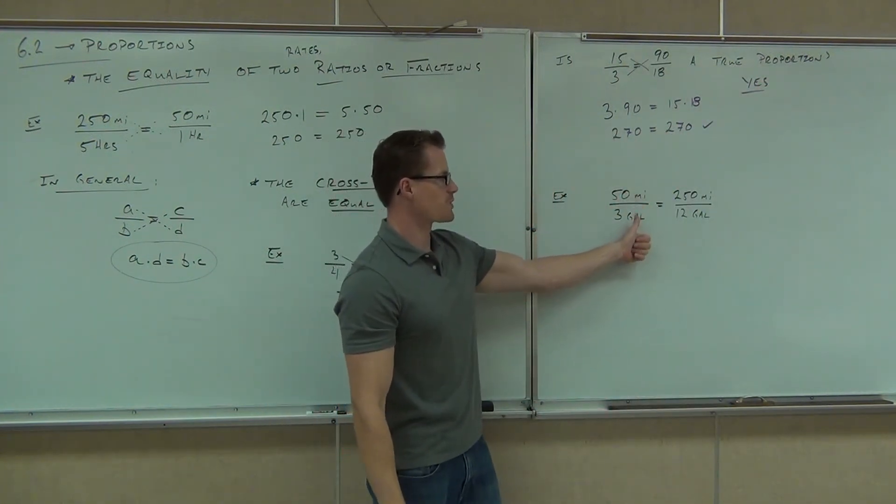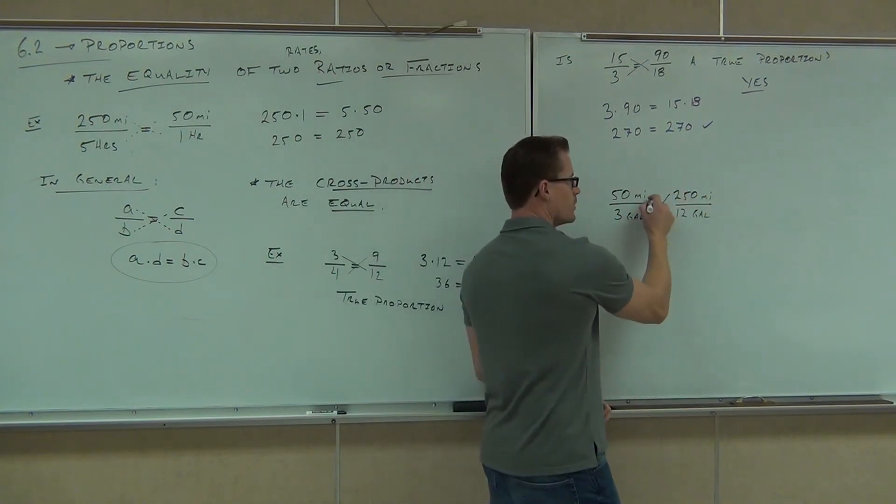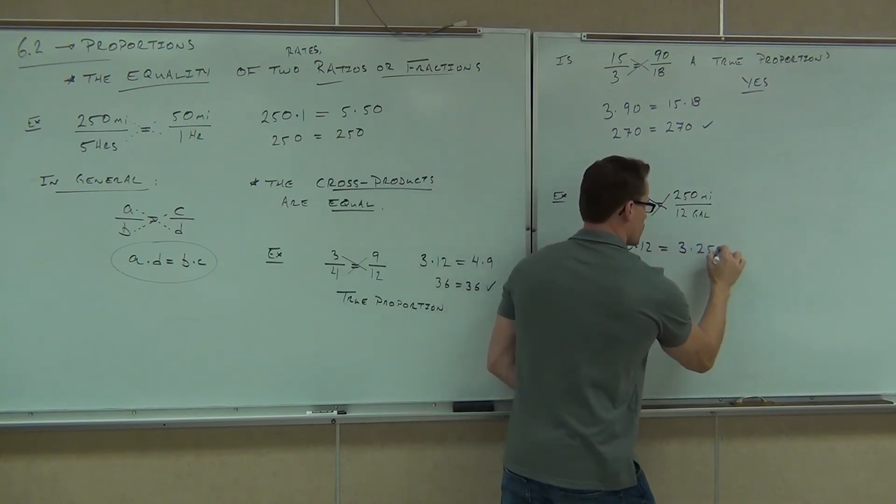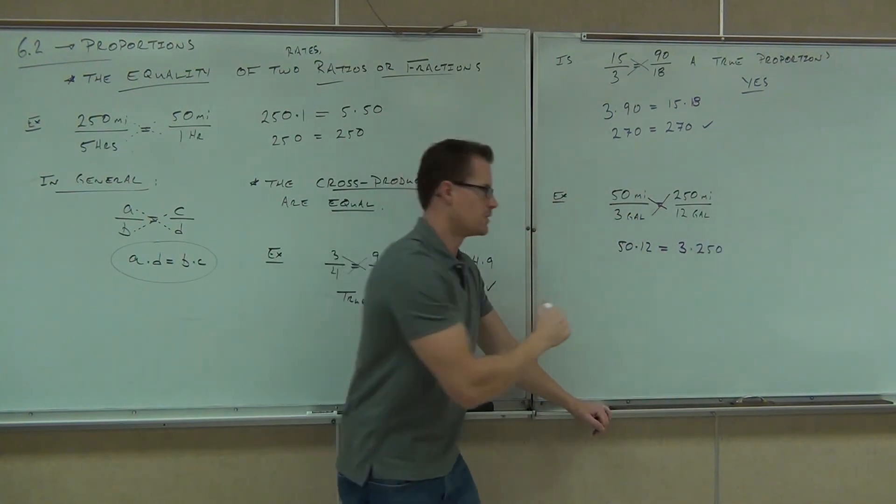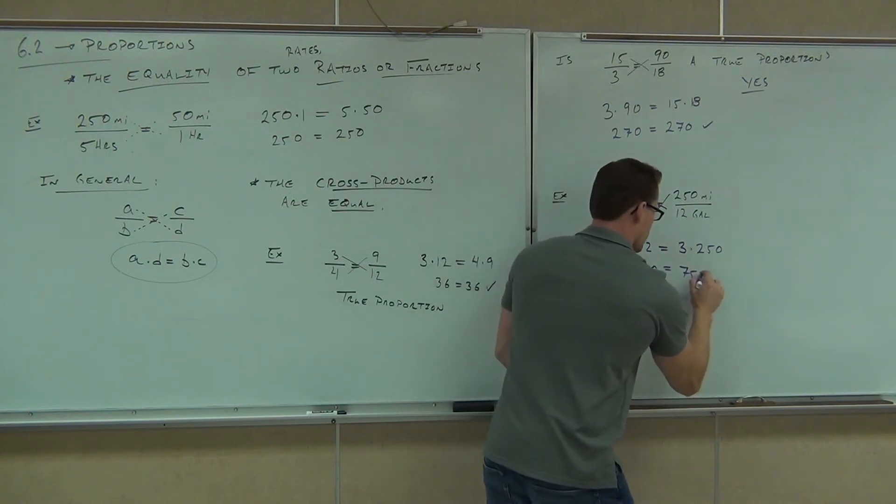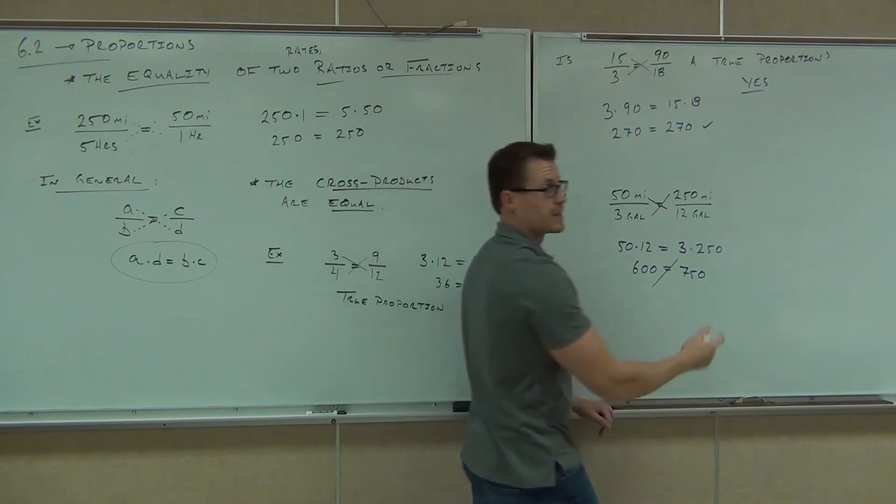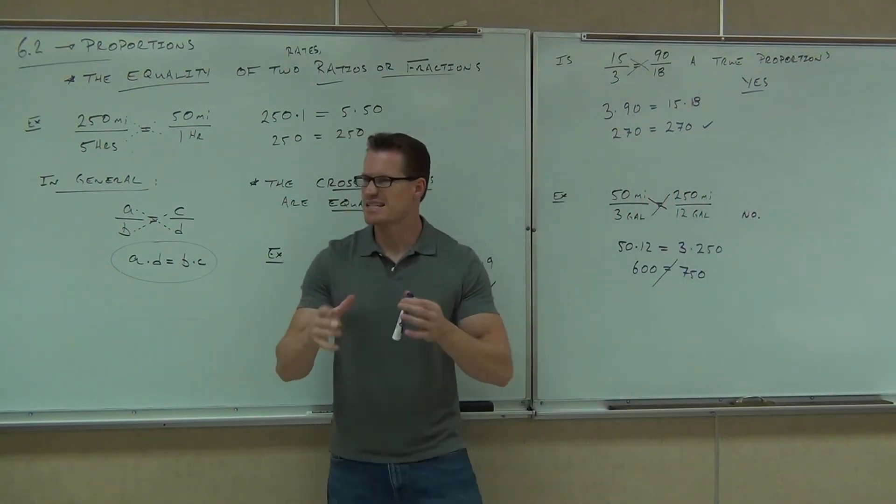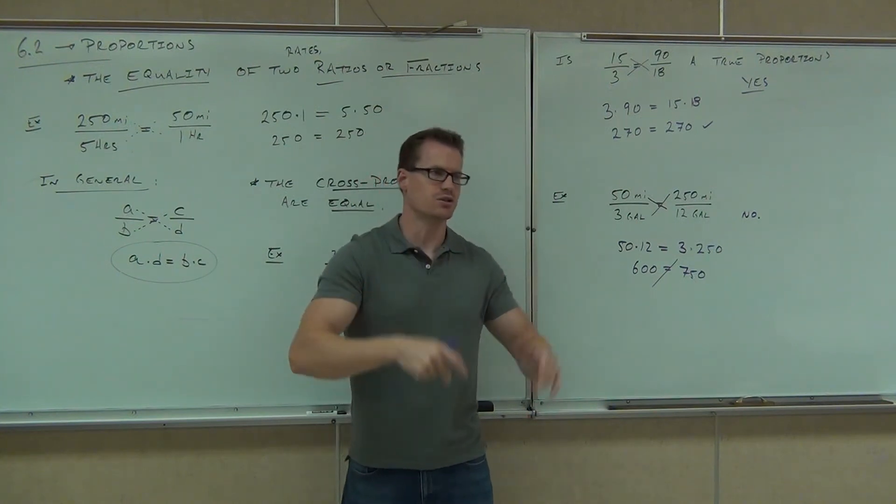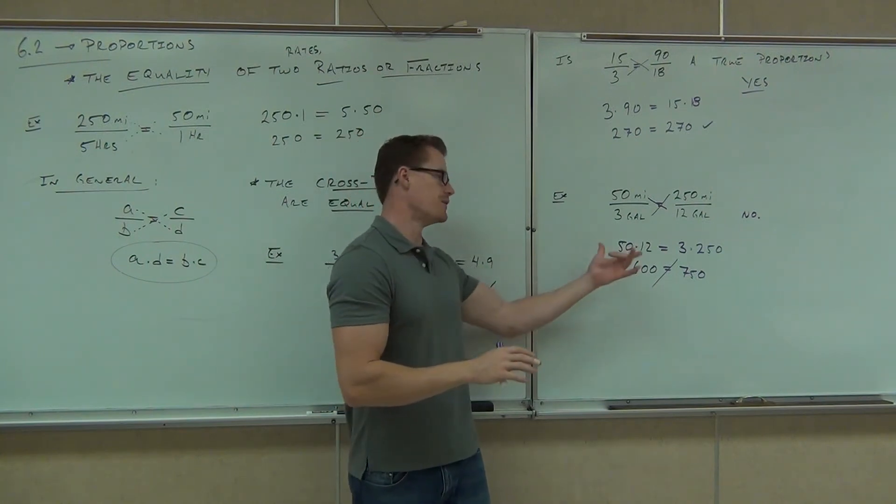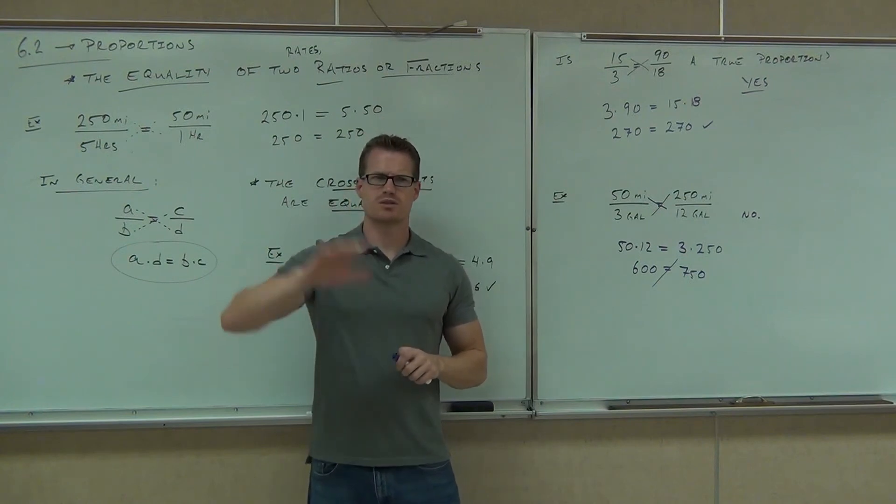How about this one? Is 50 miles for 3 gallons the same as 250 miles for 12 gallons? I don't know. But we can easily check. If we multiply the 50 times 12, we're ignoring the units for now. Is that the same as 3 times 250? Well, I don't know. What's 50 times 12? 600. What's 3 times 250? 750. Are those the same? No. So, you put no. That's not a true proportion. It's a nice, easy way to check those, though, right? Instead of having to reduce both fractions, you just do the cross multiplication and check whether they're equal or not. If they are, great. It's a true proportion. If they're not, then no. You don't have the same thing. How many people feel okay checking these proportions?